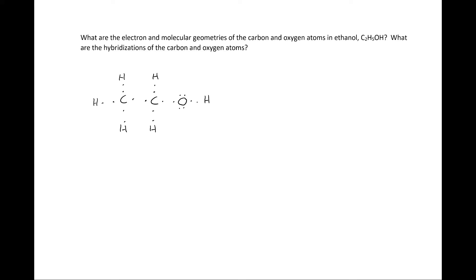The hydrogen atom next to the oxygen has its valence electron oriented towards an unpaired electron for the oxygen atom. Bonds are indicated by drawing a line between the bonding electrons. The structure is redrawn neatly.